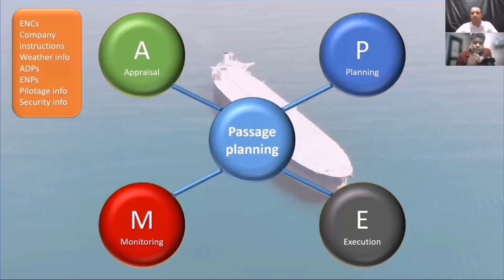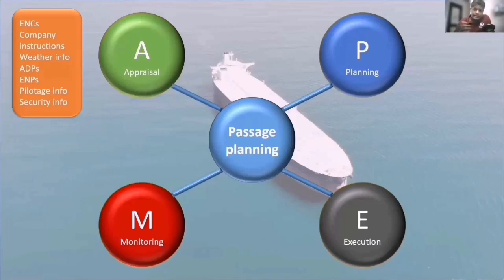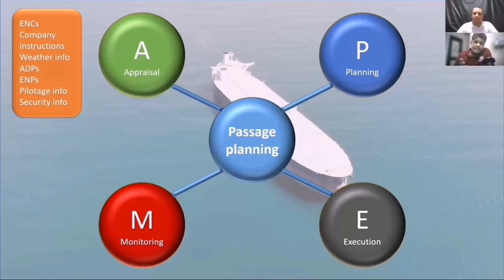Let's say you take over a watch from the second officer — you must also make sure the chart you are following is updated. So next time when you join the ship, go and check how you can verify what is the last weekly correction applied, and it must be the latest week. When you are collecting information during the appraisal stage, you also have to consider what are the company instructions regarding the voyage. For example, your company may require a minimum UKC for the Singapore Strait, or there may be certain guidelines in the navigation manual which you must know before you start the voyage. Then you also get the weather information from companies like SPOS or Admiralty Weather Routing.